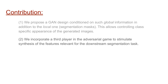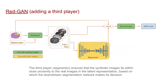The second contribution of our work aims to improve the quality of synthesized images. To do so, we incorporate a third player in the adversarial game to stimulate synthesis of features relevant for the downstream segmentation task. More precisely, we take as the third player a segmenter network that is fully trained on the same data before the adversarial game begins. During the game, both the synthetic image produced by the generator and the real image are separately passed through the segmenter. Finally, the discriminator takes as input not only concatenated real and synthetic images as in conventional GAN design, but also concatenated feature representations extracted from the last feature layer of the segmenter.